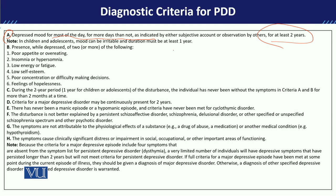For children and adolescents, the time duration is at least one year — the child must report sad mood almost every day. Importantly, it is not necessary that the child manifest only depression; they can also manifest irritability. Also note that in Major Depressive Disorder, the time period is only 15 days, unlike PDD.